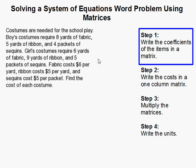Boys costumes require 8 yards of fabric, 5 yards of ribbon, and 4 packets of sequins. Girls costumes require 6 yards of fabric, 9 yards of ribbon, and 5 packets of sequins. Fabric costs $6 per yard.